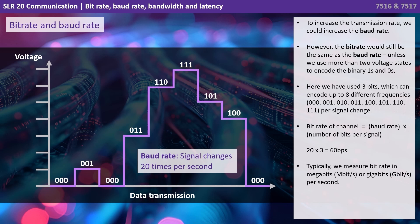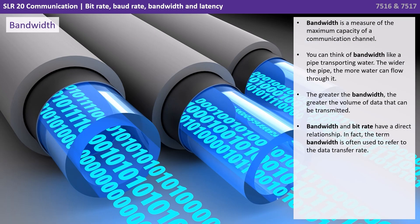Typically we measure bit rate in megabits or gigabits per second. Bandwidth is a measure of the maximum capacity of a communication channel. You can think of bandwidth like a pipe transporting water — the wider the pipe, the more water can flow through it. The greater the bandwidth, the greater the volume of data that can be transmitted. Bandwidth and bit rate have a direct relationship; in fact, the term bandwidth is often used to refer to the data transfer rate.